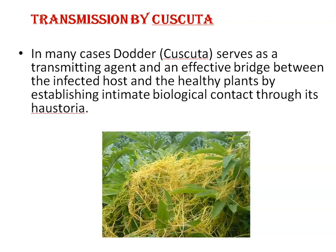Transmission by Cuscuta: you may have seen a yellow-colored weak climber on some plants. This is Cuscuta, identified as a thin, weak stem that attaches itself to a plant and wraps around its different parts. It absorbs nutrition by means of small outgrowths called hausteria. Cuscuta serves as a transmitting agent and an effective bridge between infected and healthy plants by establishing intimate biological contact through its hausteria.